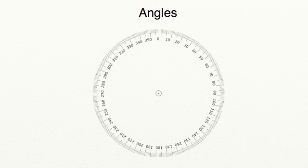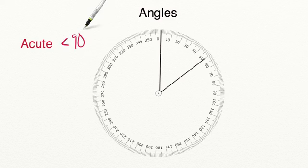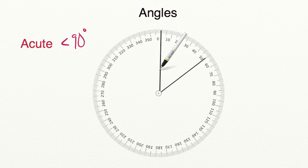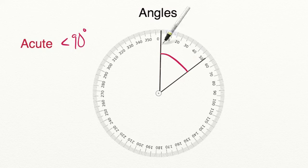Let's start with an acute angle. An acute angle is an angle that measures less than 90 degrees. As you can see, we have an angle with a line segment starting at 0 degrees, meeting at the vertex, and going all the way to 50 degrees. Since this measurement is only 50 degrees and is less than 90 degrees, it means that we have an acute angle.